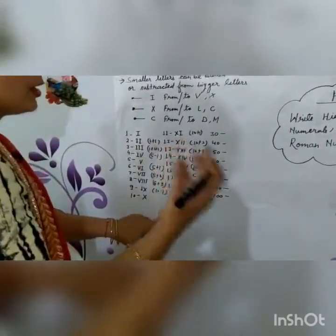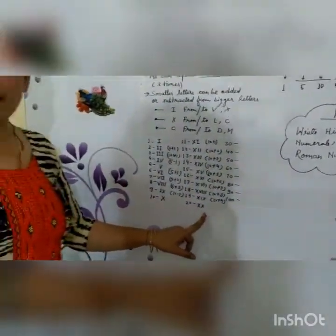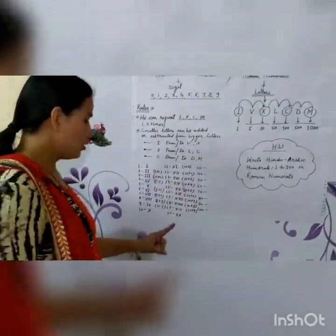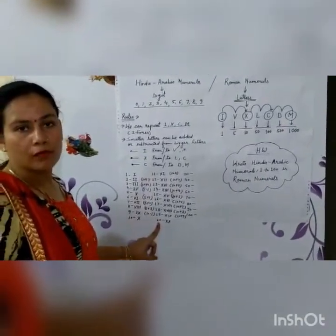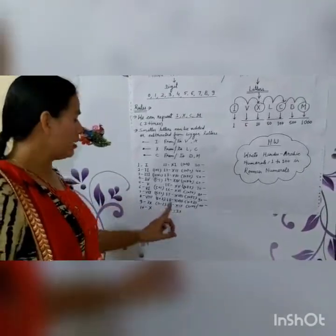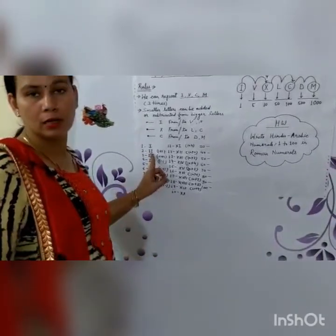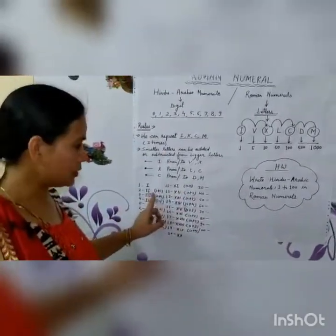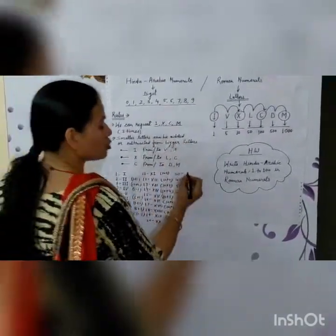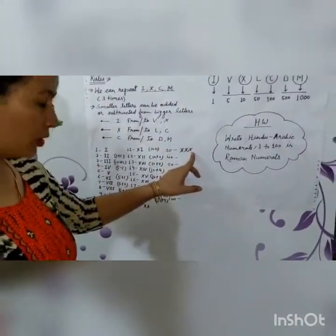For 20, we can repeat X, so we write 10 plus 10 as XX. By this rule you can write numbers from 21 to 30. For 21, that is 20 plus 1, written as XXI. For 22, that is 20 plus 2, written as XXII. In that way you can complete the series. For 30, we repeat X three times: 10 plus 10 plus 10, written as XXX.